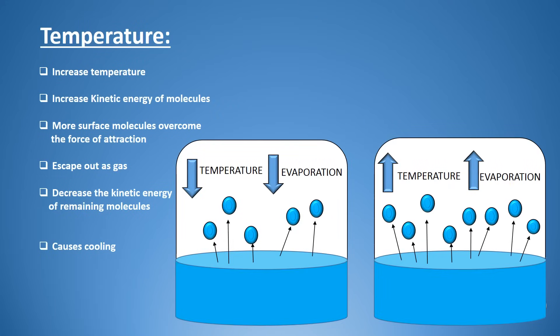Temperature also affects the rate of evaporation. Washcloths dry quickly on a hot sunny day because heat increases the kinetic energy of the surface molecules quickly, giving a greater number of molecules the chance to escape into the gaseous state, thus increasing the rate of evaporation. In winter, temperature is comparatively less, so fewer molecules can gain the kinetic energy needed to escape. Therefore the rate of evaporation is slow during winter. We conclude that temperature is directly proportional to the kinetic energy of molecules — with increased temperature, kinetic energy increases, resulting in a greater rate of evaporation.